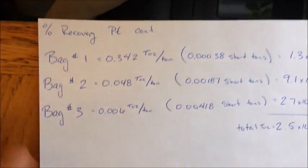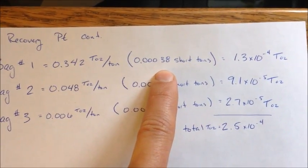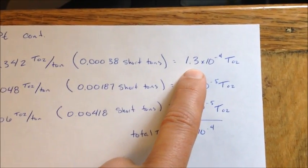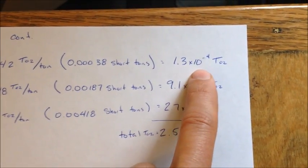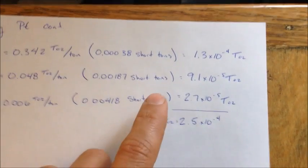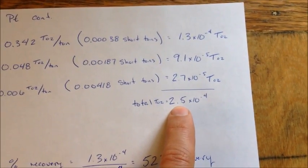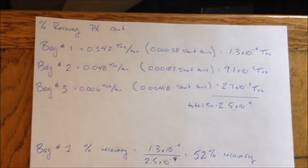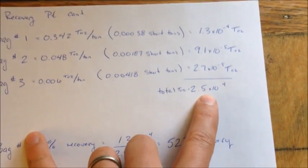So then you can multiply your troy ounces per ton by how many tons your sample weighed, and you end up with true metal in that sample. So there was 1.3, I've gone to scientific notation, 1.3 times 10 to the negative 4 troy ounces of platinum in baggy number 1. And I've done that for both baggy 2 and baggy 3. And this is the key right here. This is the total amount of metal in troy ounces in all three samples combined. You end up with 2.5 times 10 to the negative 4 troy ounces.